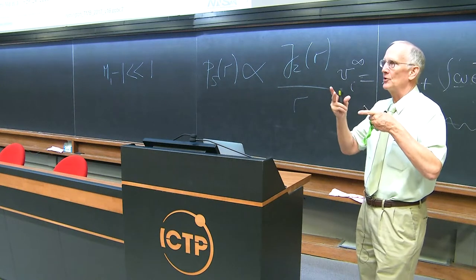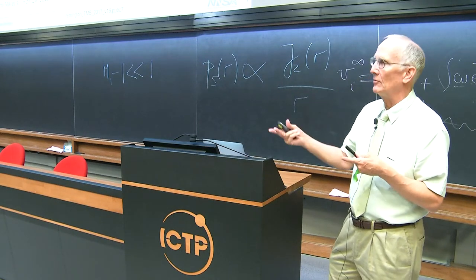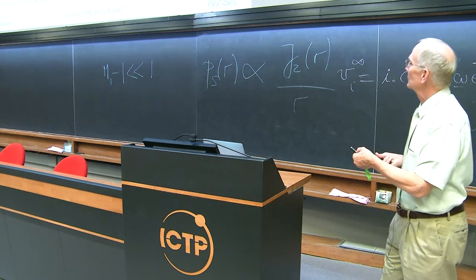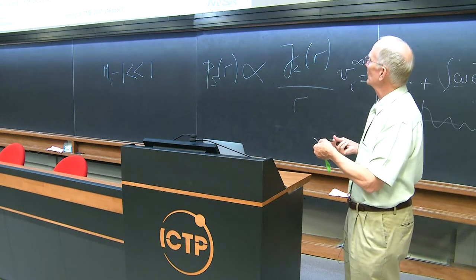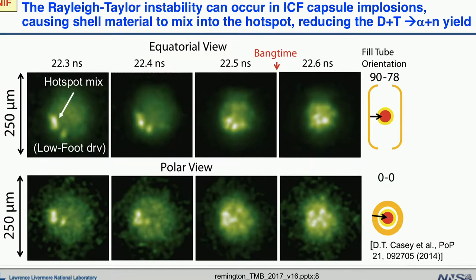The hot spot is supposed to be just deuterium and tritium — hydrogen isotopes. When you put plastic down in, especially plastic doped with silicon, the number of electrons that can radiate goes up, so the x-rays coming out of the hot spot increase. We go from a measured enhancement in the x-ray output to inferring the mixed mass, and once we know the mixed mass, we know how the implosion is being affected. These bright spots are the x-ray enhancement factor — that's the added radiation coming out of the hot spot because plastic has been injected into it.